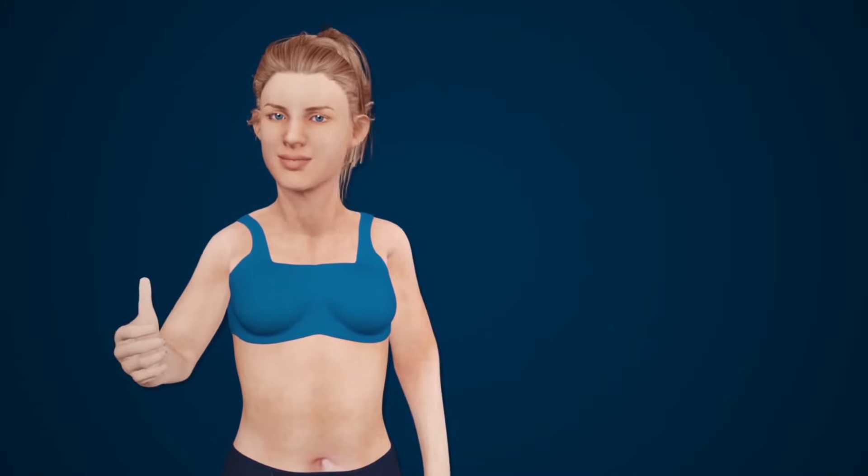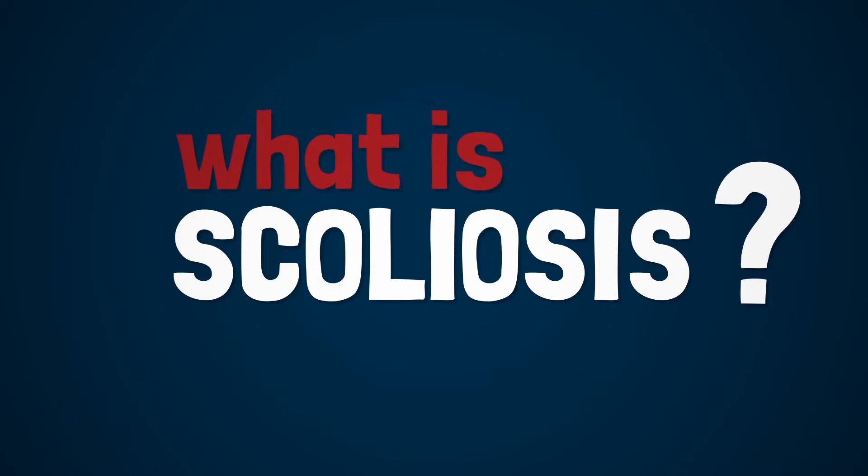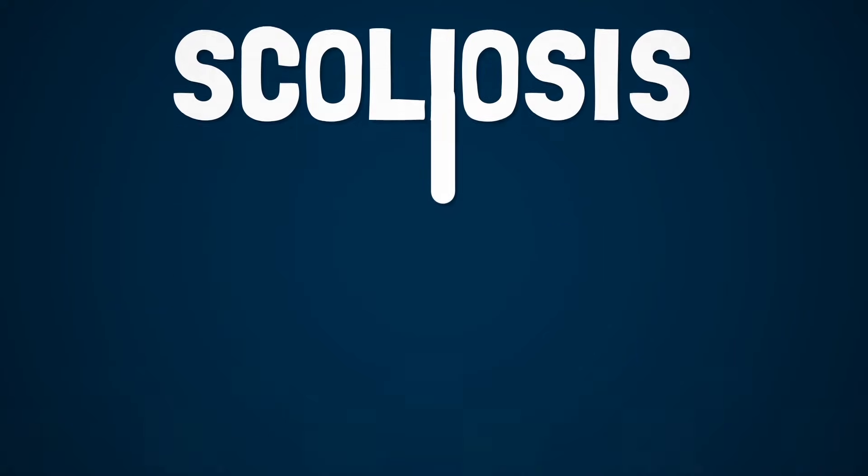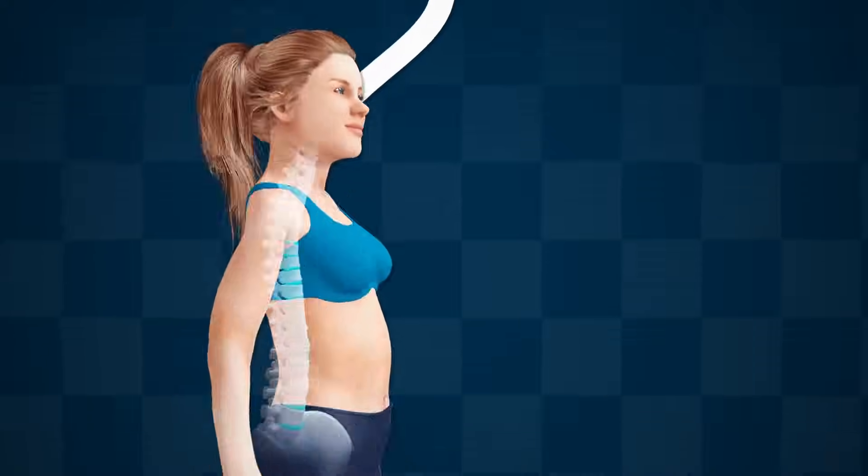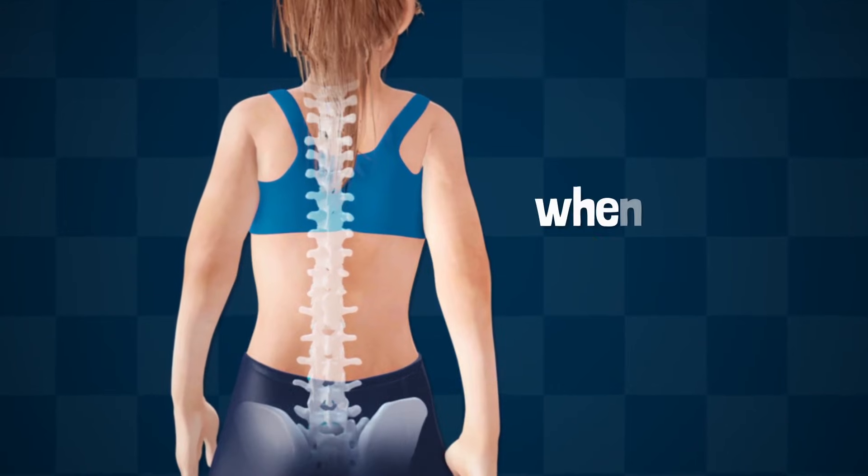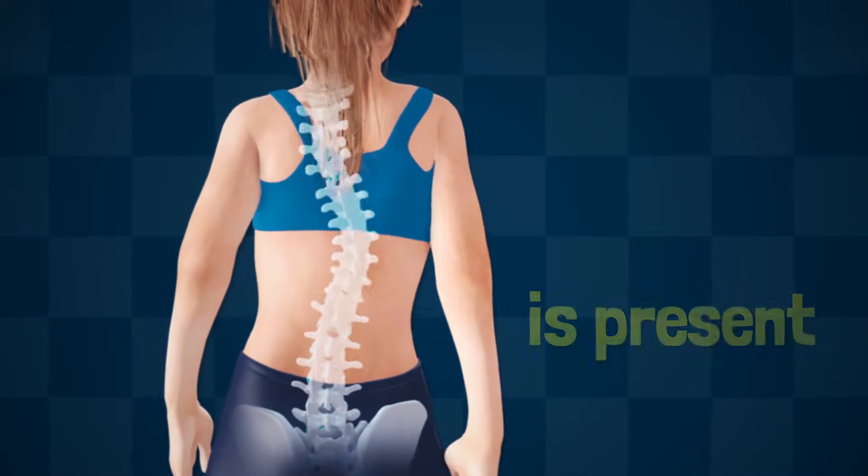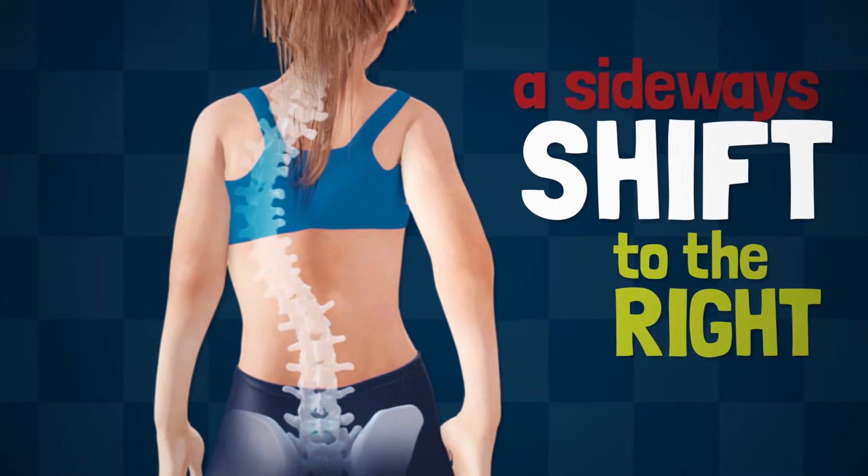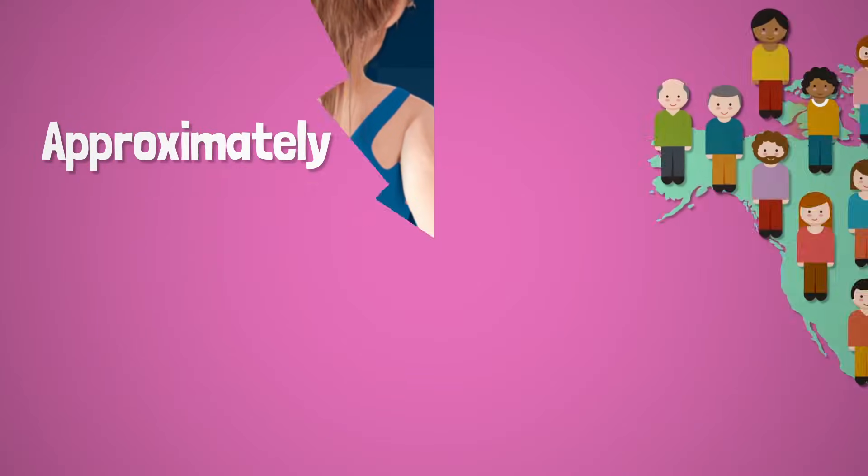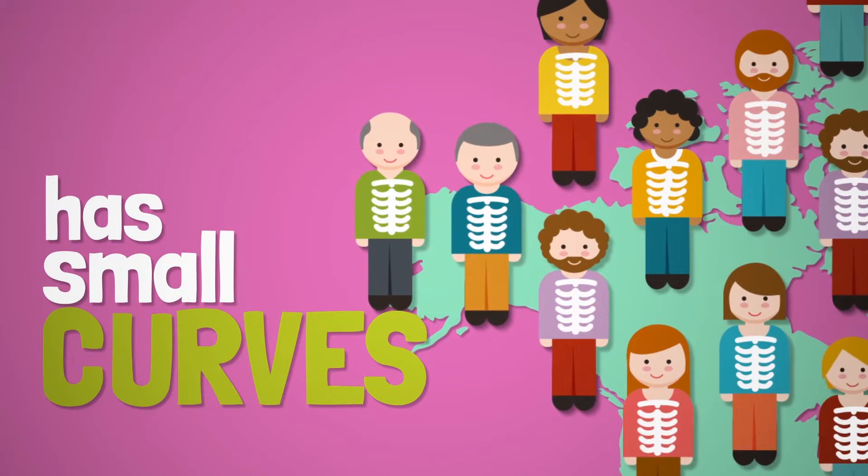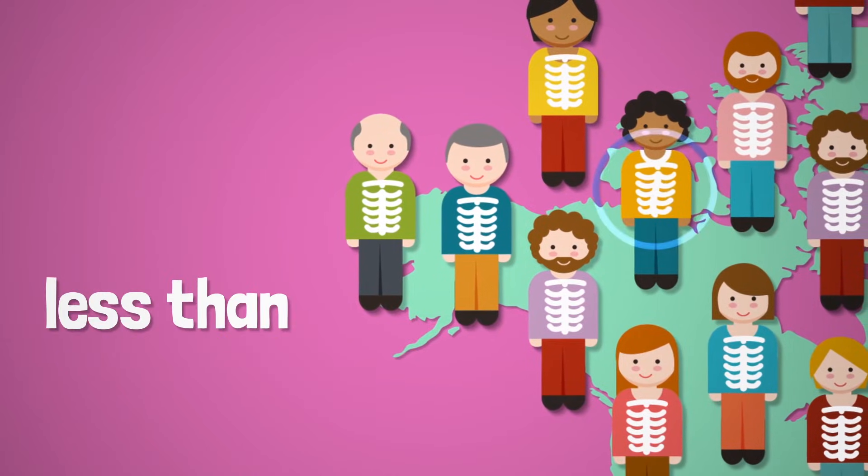Now that you have an understanding of the anatomy of the spine, your first question will be: what is scoliosis? Well, viewed from the front or back, the spinal column is straight. When scoliosis is present, you will see a sideways shift of the spine to the right or to the left.